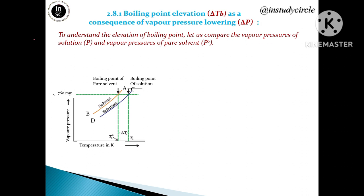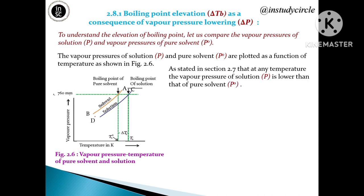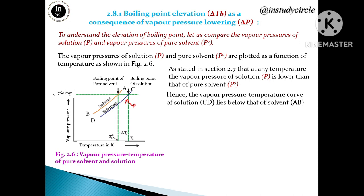To understand the elevation of boiling point, we compare the vapor pressure of the solution (P) and the vapor pressure of the pure solvent (P0). These are plotted as a function of temperature in figure 2.6. At any temperature, the vapor pressure of the solution, shown by curve CD, is lower than the vapor pressure of the solvent, shown by curve AB. Therefore, the vapor pressure-temperature curve CD lies below the curve AB.